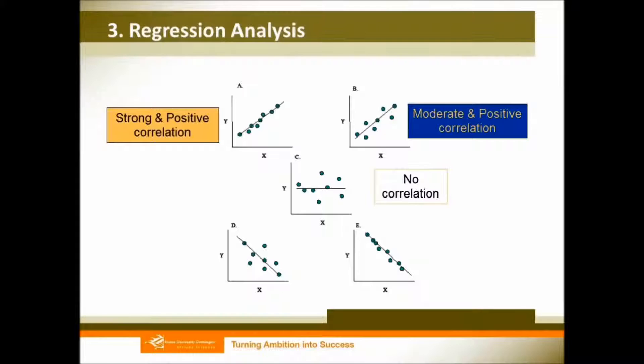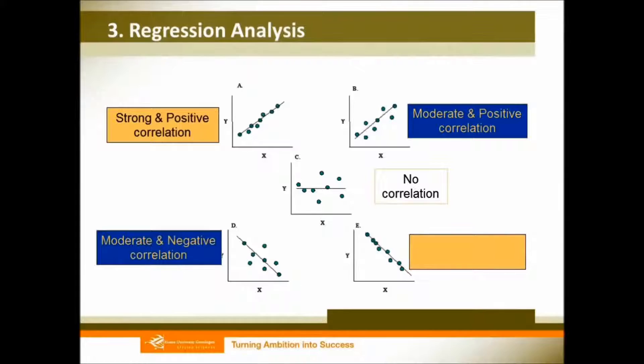You can use the same theory to interpret figures D and E. Figure D shows a moderate and negative correlation between x and y, while figure E shows a strong and negative correlation between the independent and dependent variables.